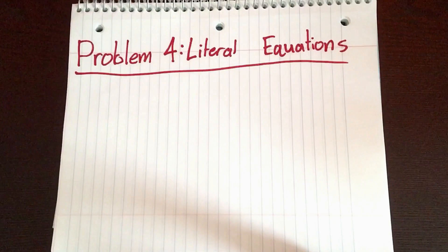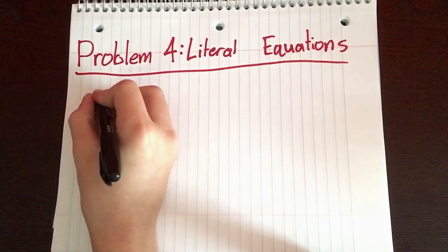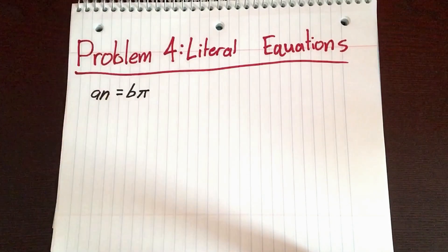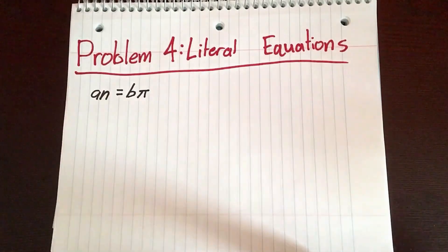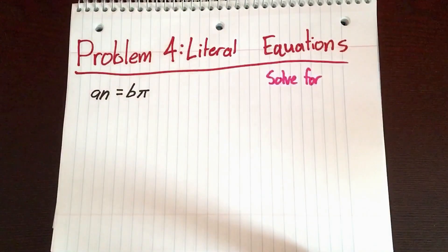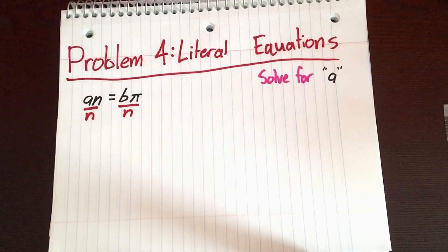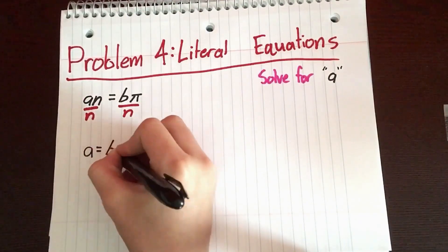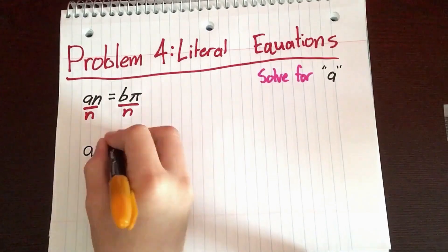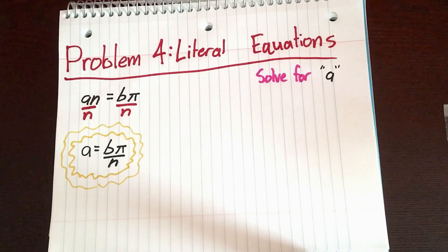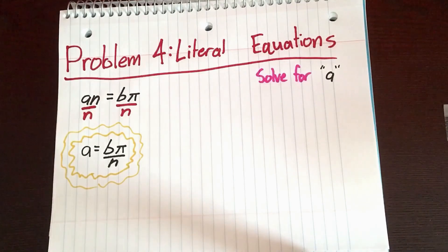Problem 4: literal equations. We have an equals b times pi, and we're solving for a. We divide both sides by n so that we have a by itself. The answer is a equals b pi divided by n. It's a pretty easy one.